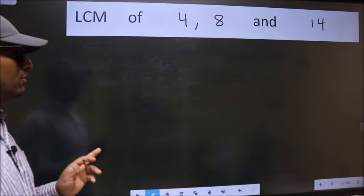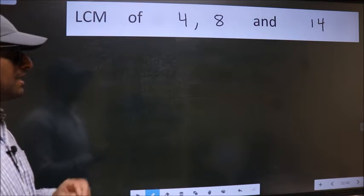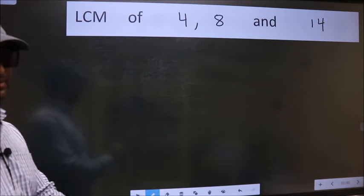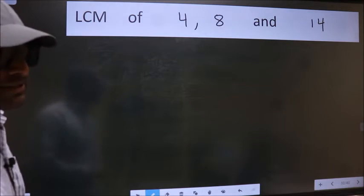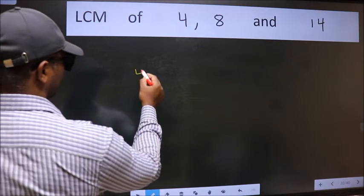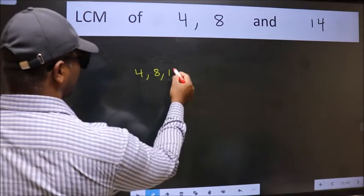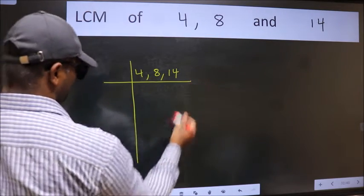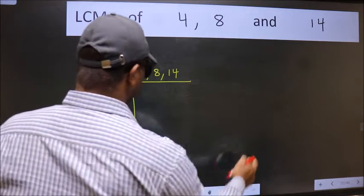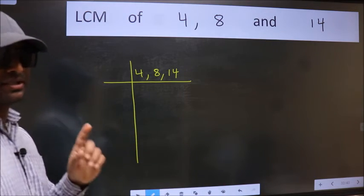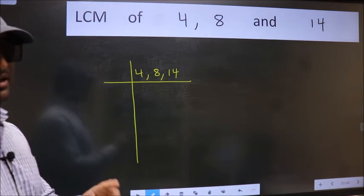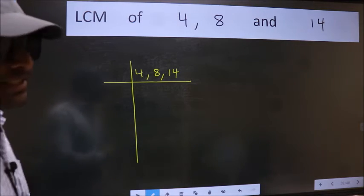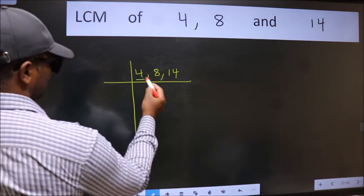LCM of 4, 8 and 14. To find this LCM, we should frame it in this way: 4, 8, 14. This is your step 1. Now we should focus on the first number which is 4 here.